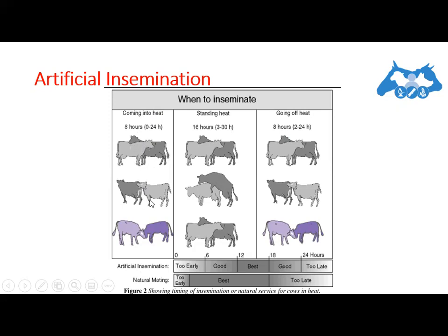The animals start to stand and allow mounting. In the first hours when the animal comes into heat, this is the initial phase. Then there is the standing heat phase, which lasts for about 3 to 30 hours, with an average of 16 hours. During this period the animal will interact with and mount other animals, or allow itself to be mounted.